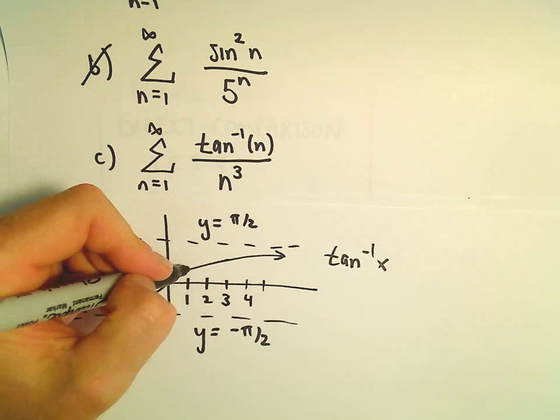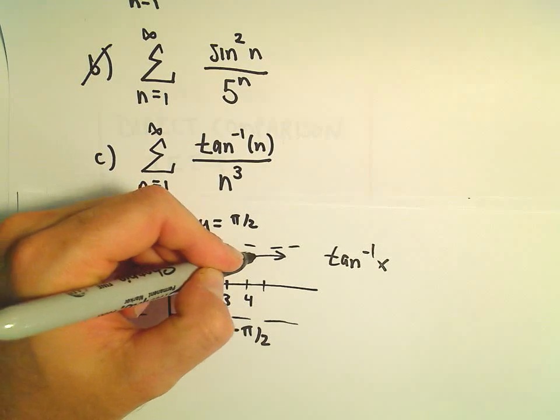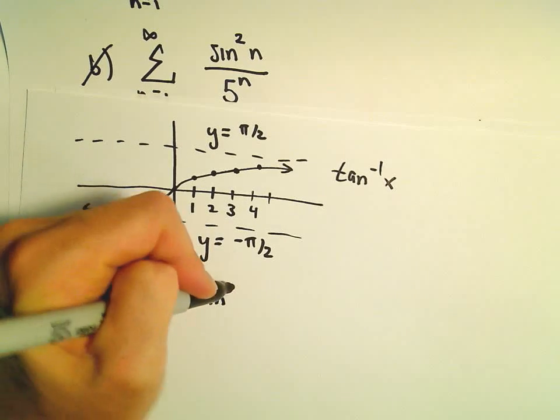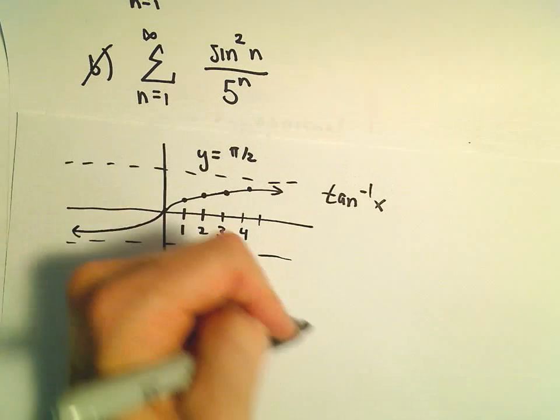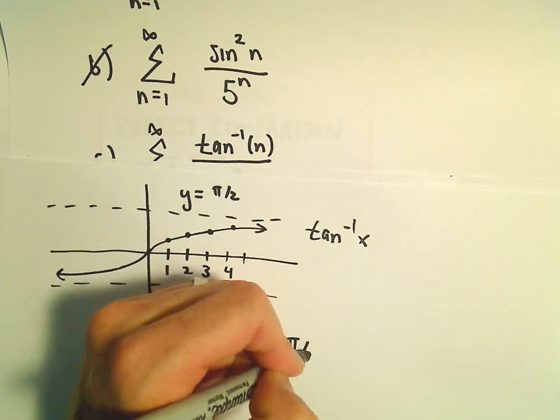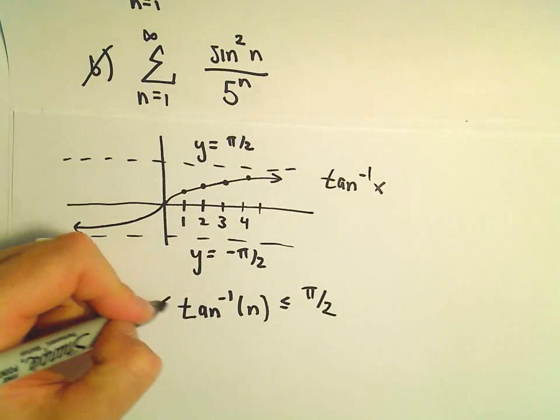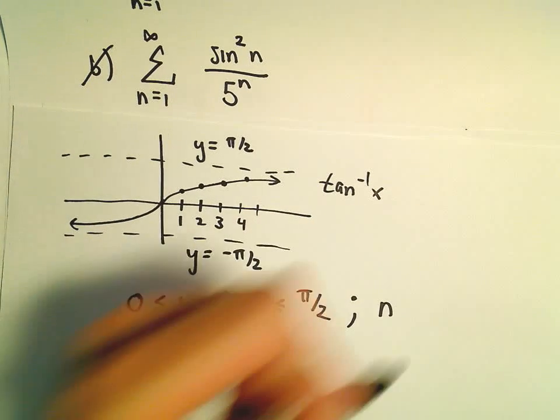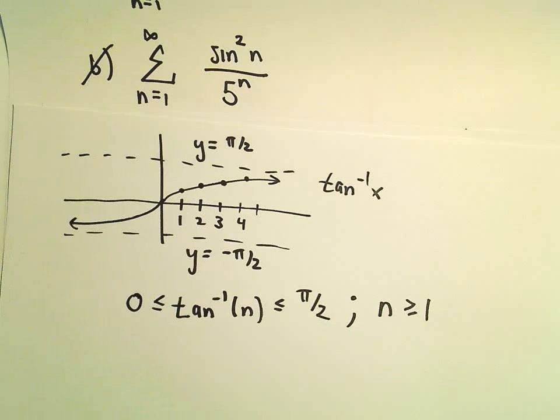And those are going to be the values we get in the numerator. But if you think about it, arctangent of n is always going to be smaller than this asymptote, π/2, and it's always greater than or equal to 0 for values of n that are greater than or equal to 1.